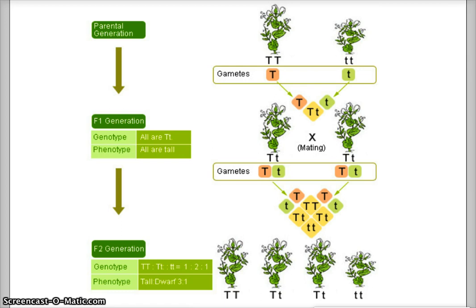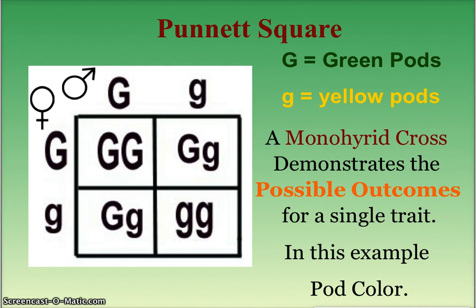All F1 offspring came out heterozygous but showed the dominant trait — all tall plants with genotype capital T lowercase t. When he crosses the F1 generation we get the F2 generation showing three dominant tall plants and one recessive short plant. This became known as Mendel's ratio or law of dominance: 3 to 1, or 75%. The offspring were TT homozygous dominant, two Tt heterozygous, and one tt homozygous recessive.